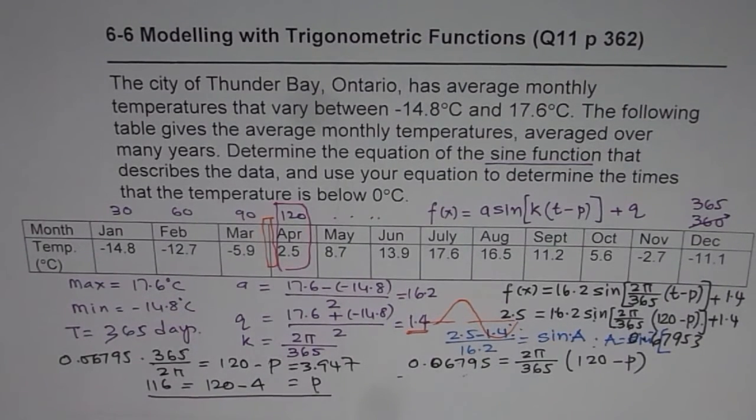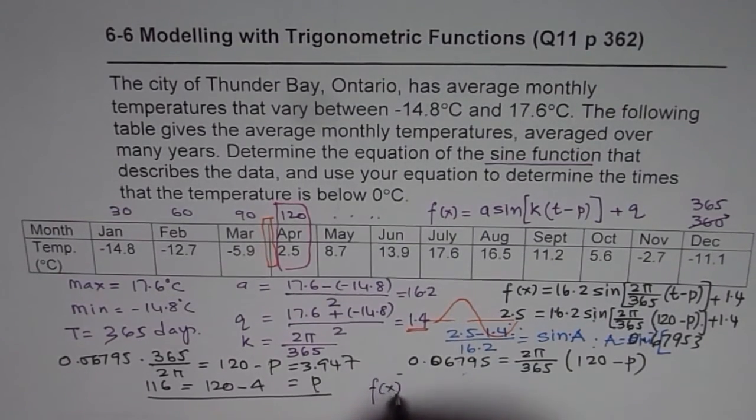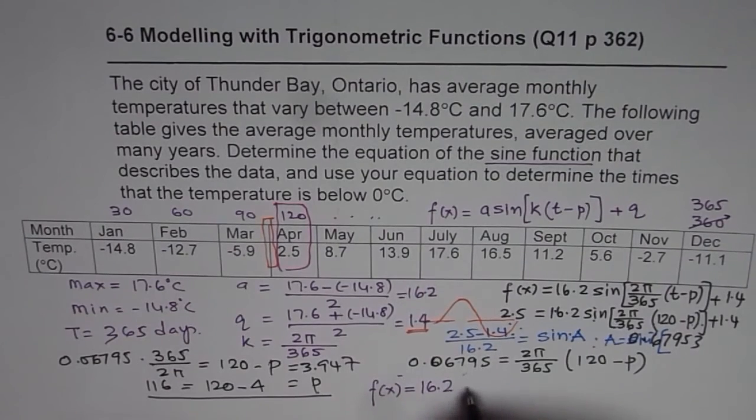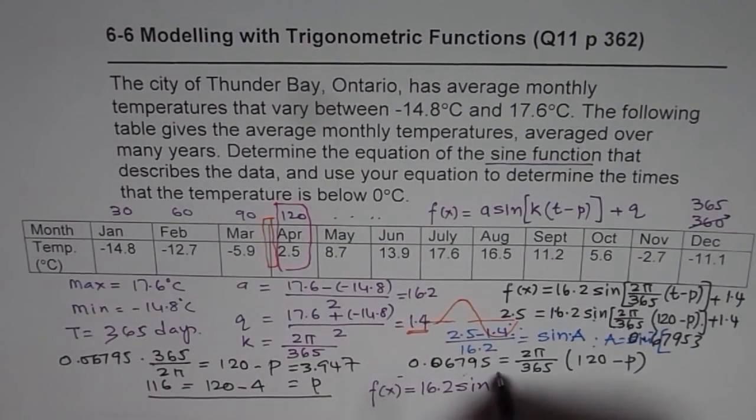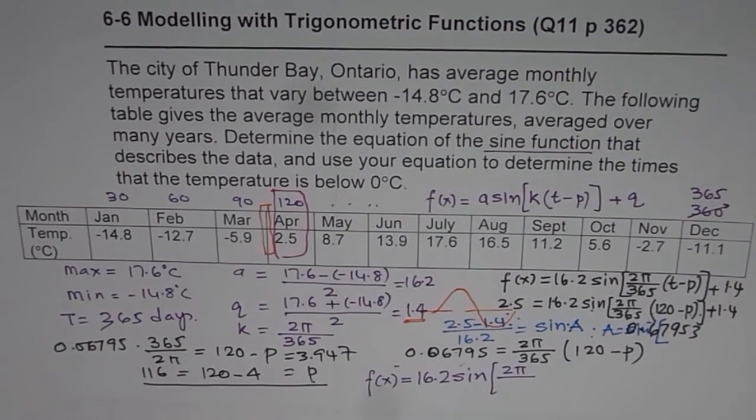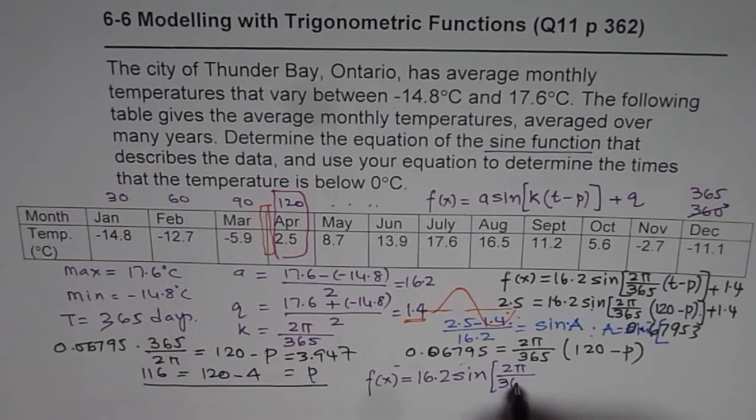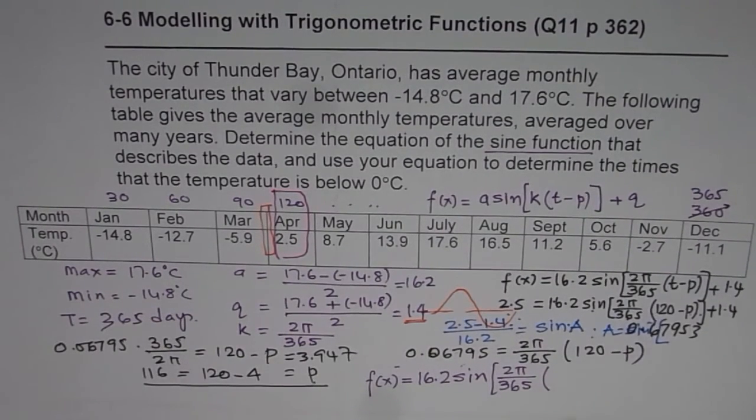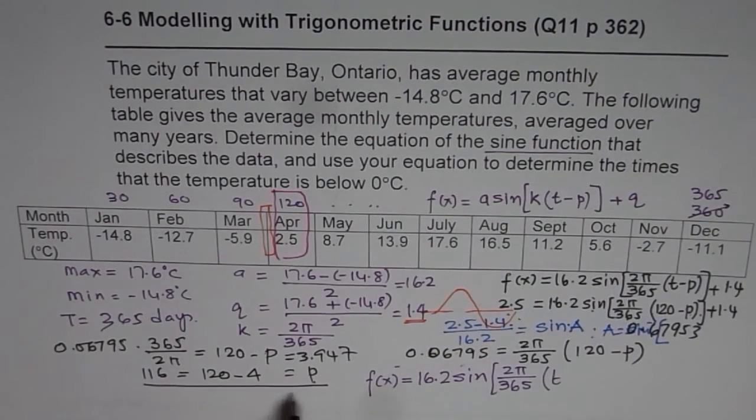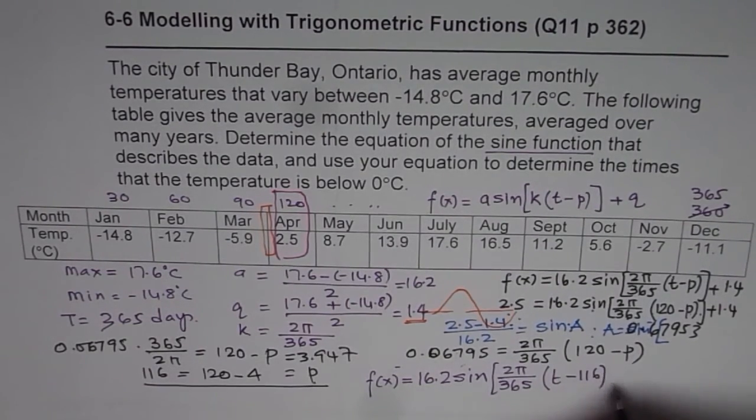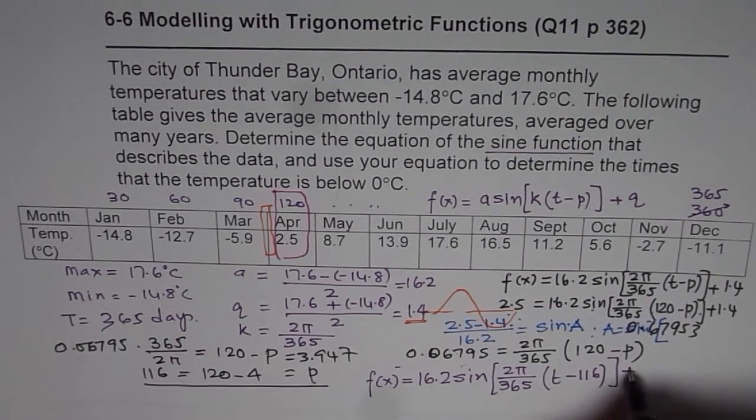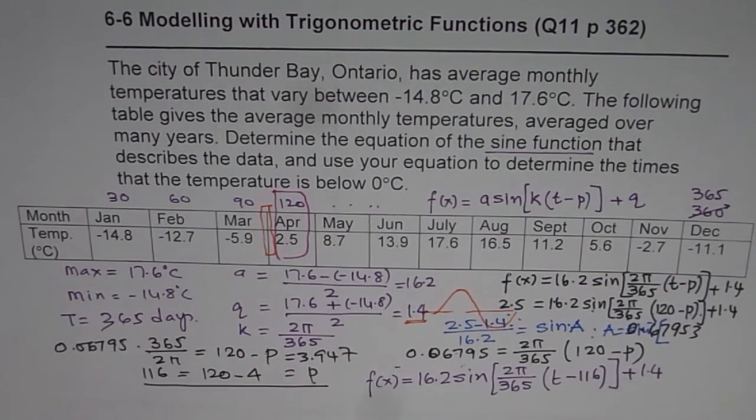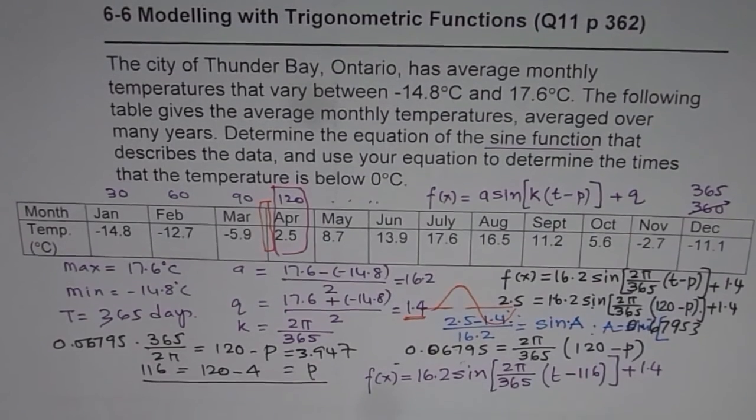So you get your final answer, which is f(x) equals to 16.2 sine 2π divided by, let me push a bit more. I know my boundary is here. Anyway, 365, so when I record, I'm not seeing what I'm recording. So t is now t. And p is 116. And you know, my videos are never edited, so 1.4. So that is how you could write down the answer. You can check these calculations sometimes. My calculations could be wrong, because I'm not very good at using calculator.